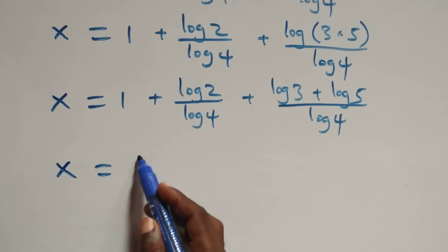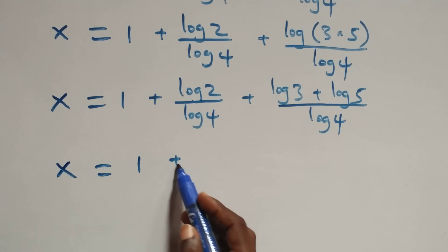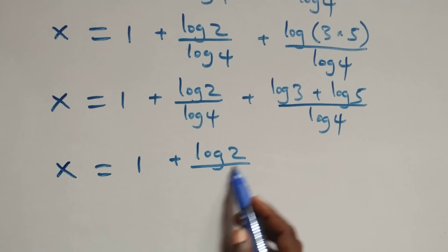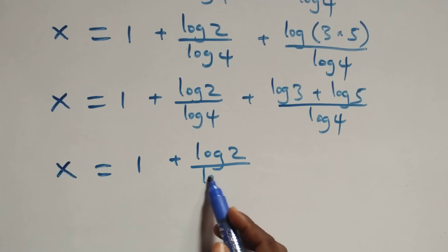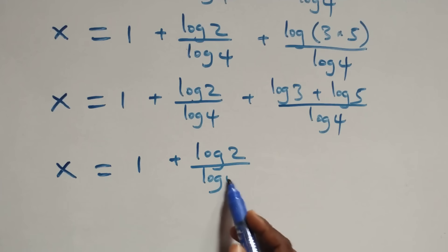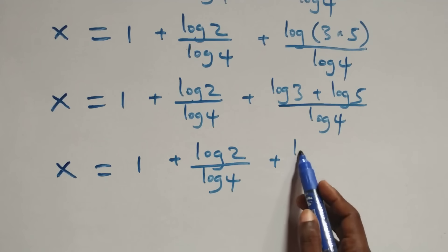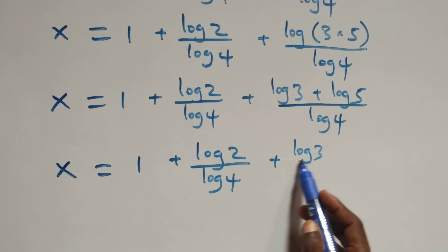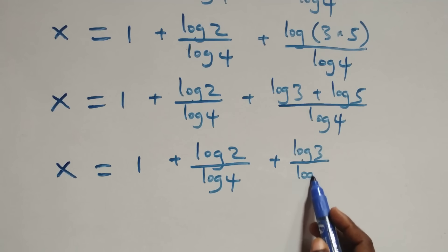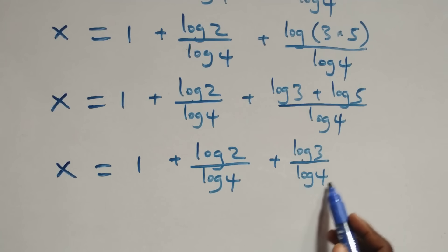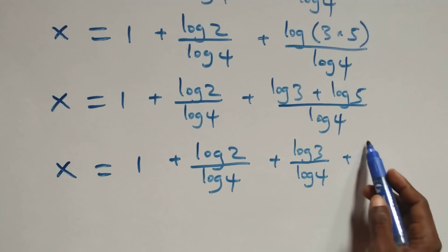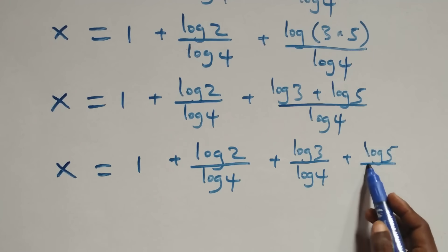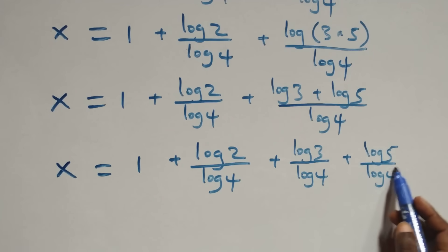Expanding log 15 as log(3 × 5) = log 3 + log 5, and separating into fractions, we have x equals 1 plus log 2 over log 4 plus log 3 over log 4 plus log 5 over log 4.